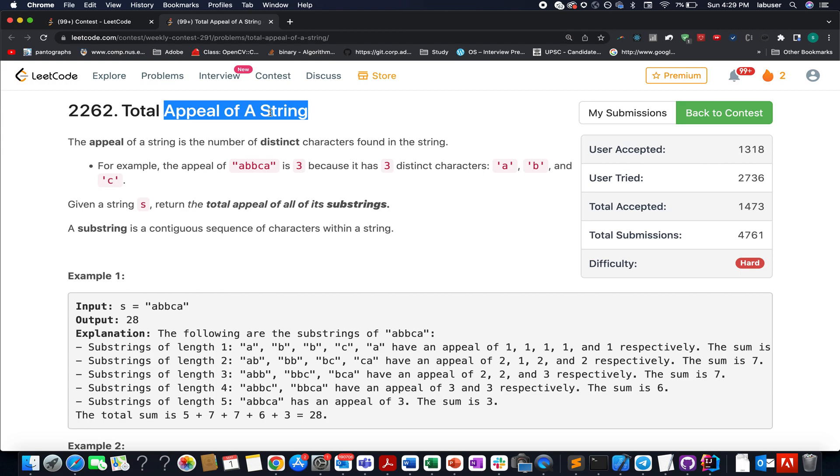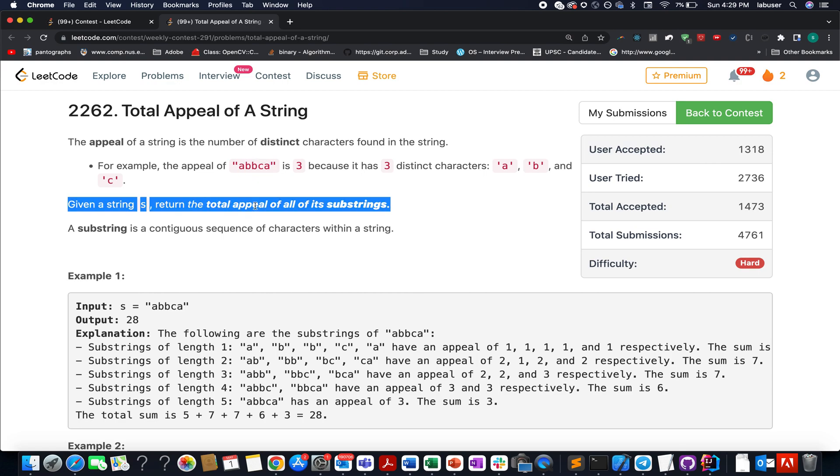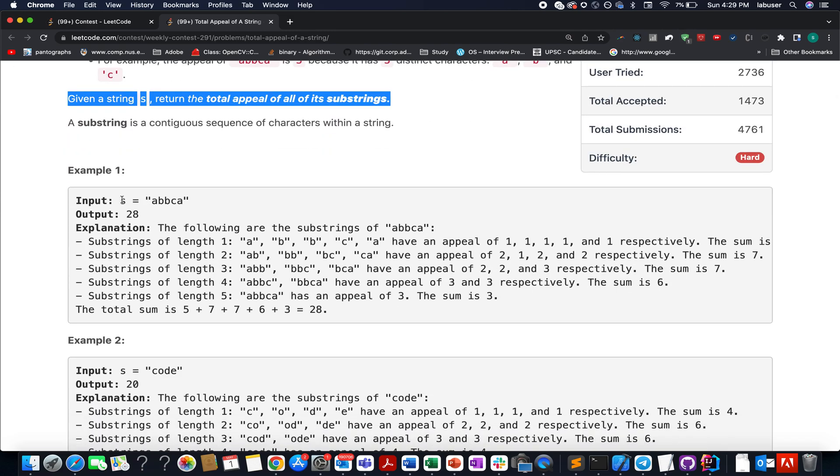How do you identify an appeal of a string? It is equal to the number of distinct characters found in that string. For example, here there are three distinct characters a, b, and c, therefore for this particular string the appeal turns out to be three. We need to identify the total appeal of all the possible substrings of a given string.